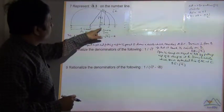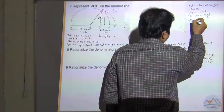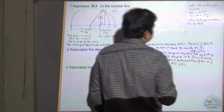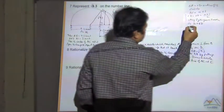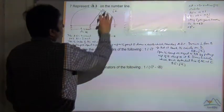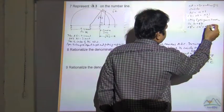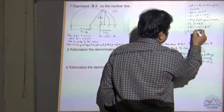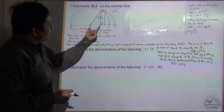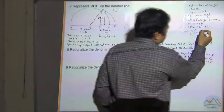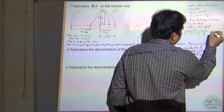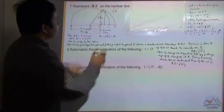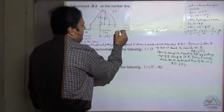Using Pythagoras theorem in triangle OBD: OD squared equals OB squared plus BD squared. OD equals x plus 1 divided by 2, and OB equals x plus 1 divided by 2 minus 1. BD we need to find — say it is y. So we need to prove y is equal to under root x.